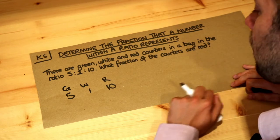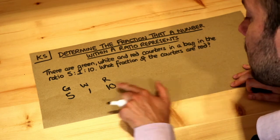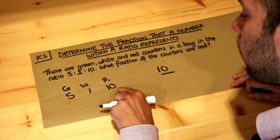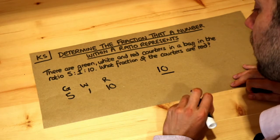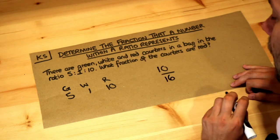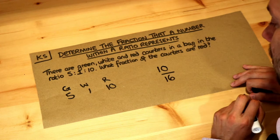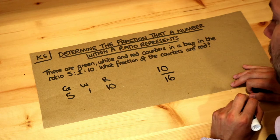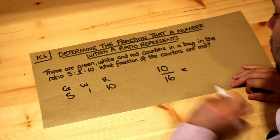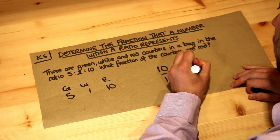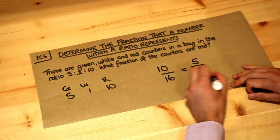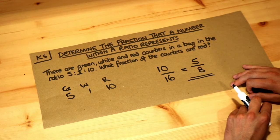Then what fraction of the counters are red? Well, 10 of the counters are red out of the total number of counters, which is 16. And therefore 10 sixteenths of our counters are red. Now if we simplify that fraction, we divide top and bottom by 2 to get 5 eighths. So 5 eighths of our counters are red.